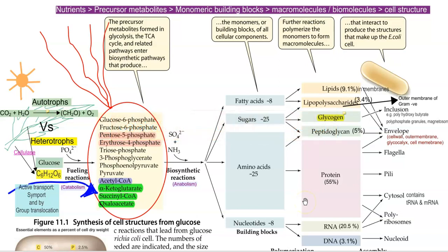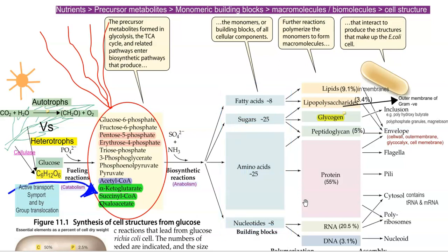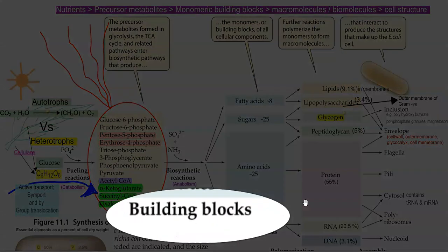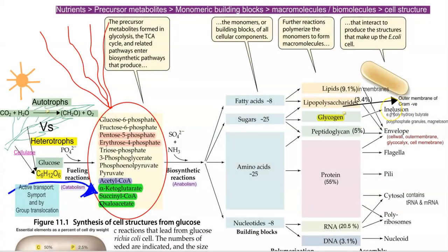Through various biosynthetic reactions, more complicated monomeric building blocks required to form the cellular components are produced. These include fatty acids, large polymeric sugar molecules, more than 25 amino acids, and nucleotides — these are all referred to as the building blocks of the cell.